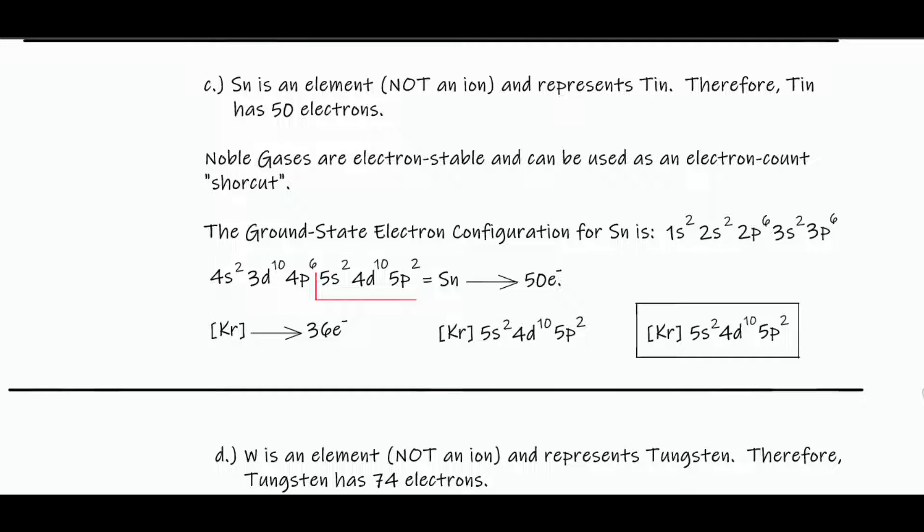So 50 electrons for tin, Sn, noble gases are electron stable and can be used as an electron count shortcut. So ideal way to write the ground state electron configuration for tin is to write it out longhand. So we have the order here. So 2, 4, 10, 12, 18, 20, 30, 36, 38, 48, 50.